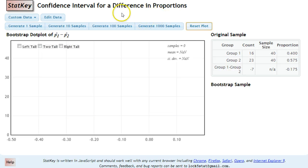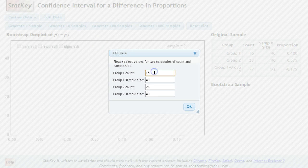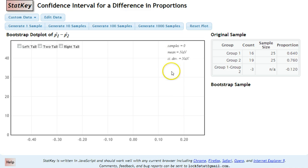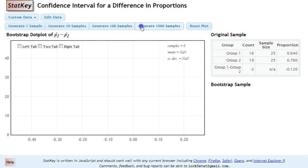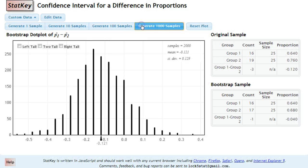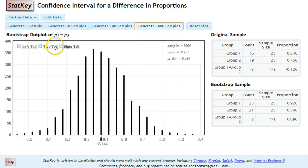And when we pull that up, we are going to edit our data. And we are going to get a 16 out of 25 for our first group and our 19 out of 25 for the second group. If you flipped groups one and two, as long as you are consistent and know what each group stands for, it is not a big deal. So we have our data inside. We generate our samples. And we are going to choose the middle 95% to be our confidence interval. So we use the two tail here.